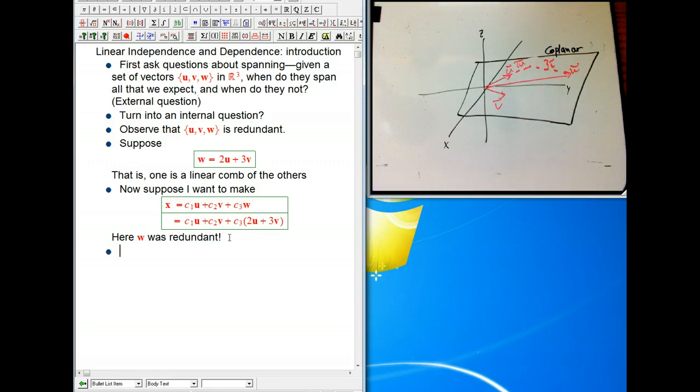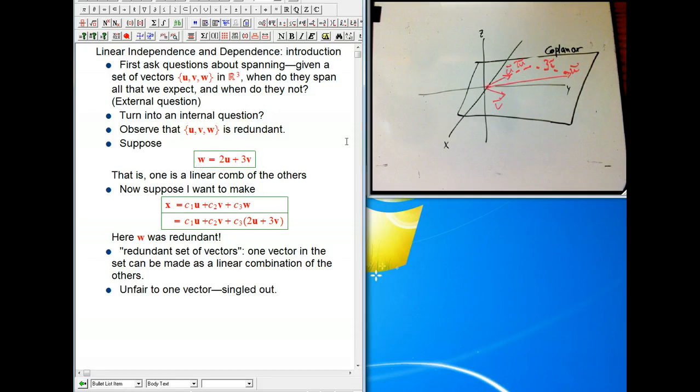And so our first proposal for the precise definition of a redundant set of vectors would be that one vector in the set can be made as a linear combination of the others. The problem is that's unfair. This is unfair to one vector, and it tends to single it out unfairly.